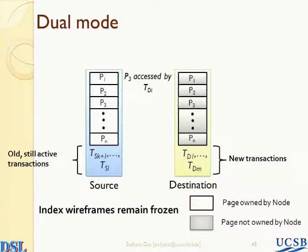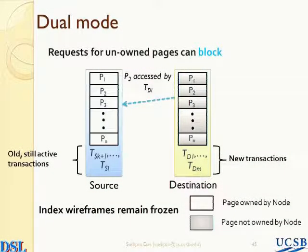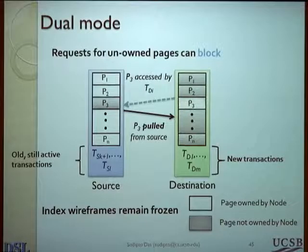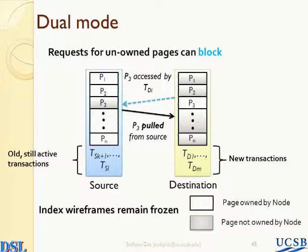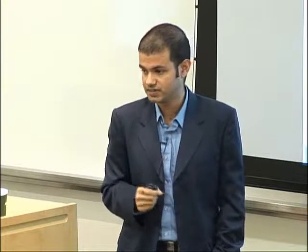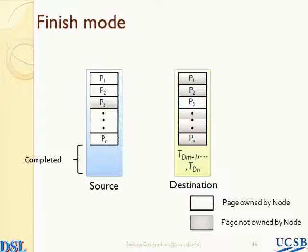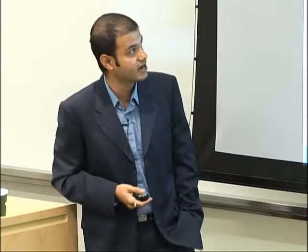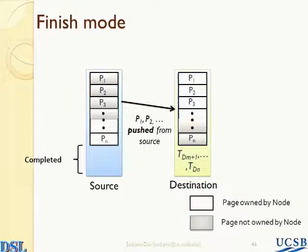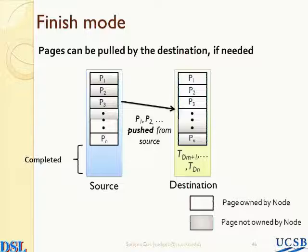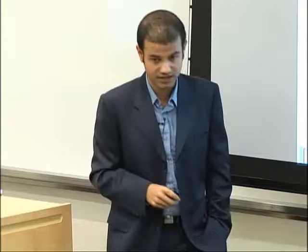If page P3 is being accessed by a transaction at the destination, the request is sent to the source, and the source does some synchronization to ensure that page P3 is not currently being accessed by any other transaction. If that is true, it changes the ownership information and migrates the page over to the destination. This is the only point in time where the two nodes synchronize when executing transactions. The concept of unique page ownership allows us to use this mechanism. As soon as the source completes all transactions, it figures out what pages have still not been migrated and asynchronously pushes them to the destination. We show how the index metadata can be used to detect duplicates in this setting.